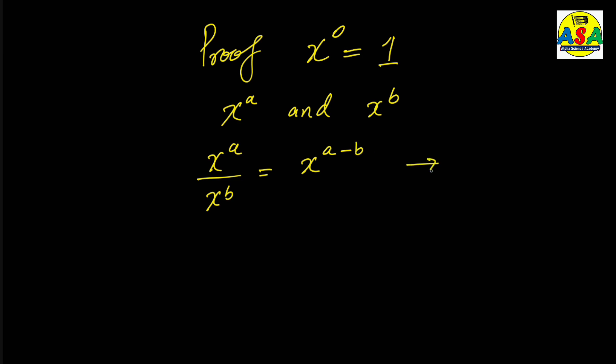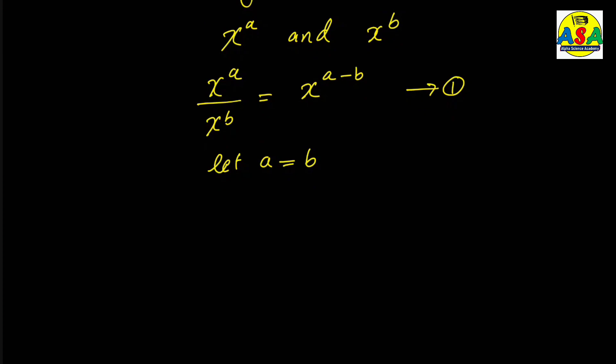But a is equal to b. If a is equal to b, equation number one will become x to the a over x to the a is equal to x to the a minus a. And you know that whenever two equal things are divided, both of them cancel each other giving us 1.